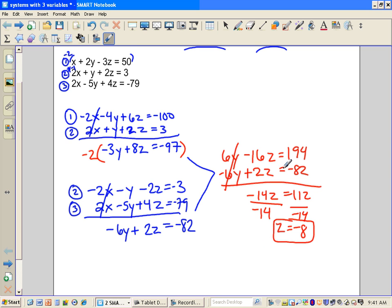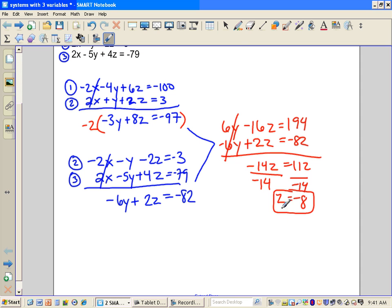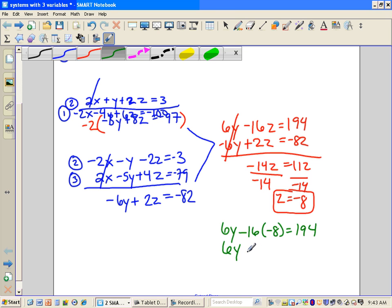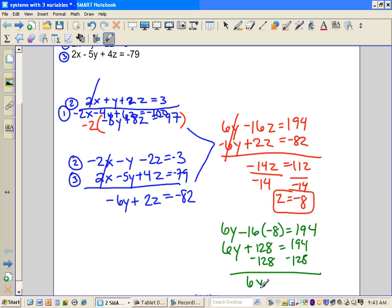Here's where we do the substitution part and just working our way backwards. If z is equal to negative 8, let's take this top equation. So 6y minus 16 times negative 8 is equal to 194. So negative 16 times negative 8 is going to be positive 128 equal to 194. If I subtract 128, 6y is equal to 66, so y is equal to 11.